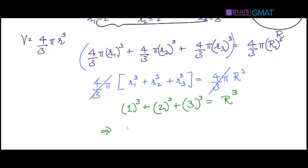So the value of R is cube root of 36. Clearly 36 is a perfect square but not a perfect cube.